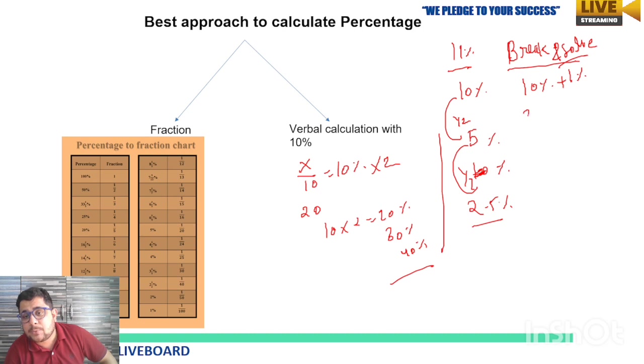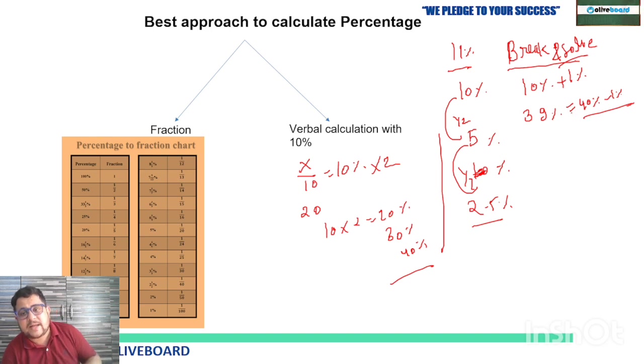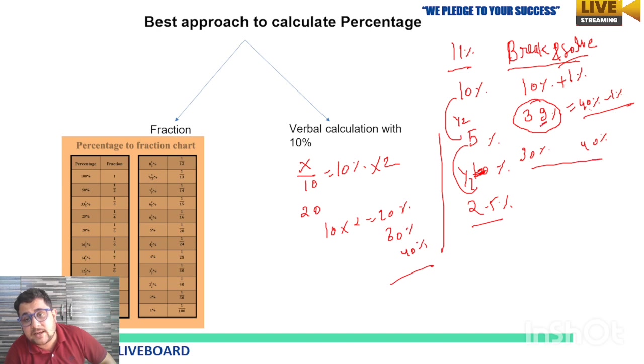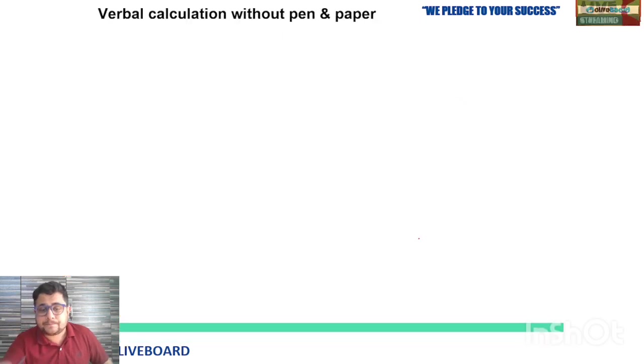The multiple of 10 which is near to that asked percentage value, you have to keep. Say 40%—how much less than 40%? So 39% is between 30% and 40% in multiples of 10, but near to 39, so we will keep 40% minus 1%. This will be easy for you. You can easily calculate.